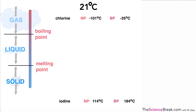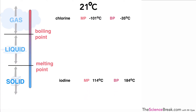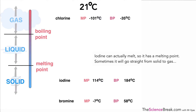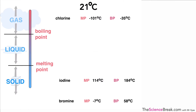What about iodine? Iodine melts at 114°C and boils at 184°C. Since 21°C is well below its melting point, it hasn't melted — let alone boiled — so at 21°C iodine is in solid form. Iodine is actually a strange one because it can go straight from solid to gas, but at that temperature it's solid.